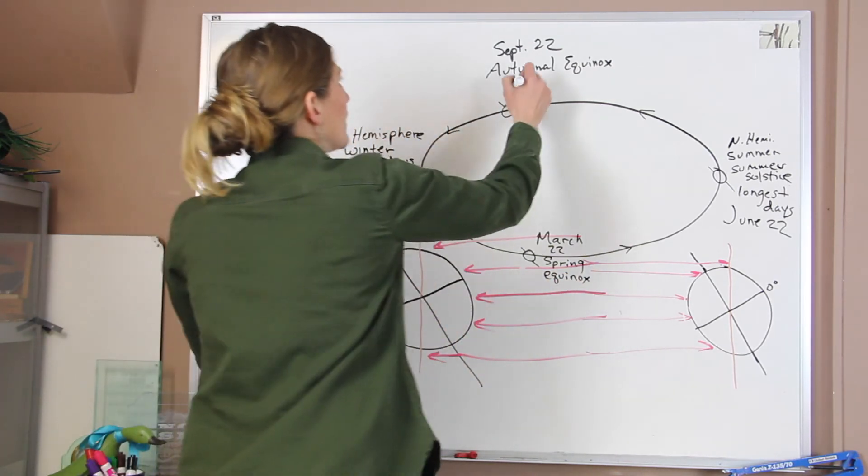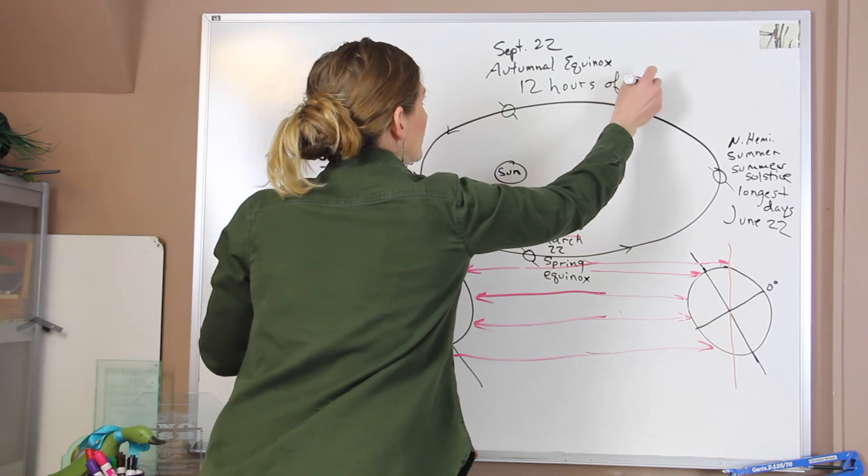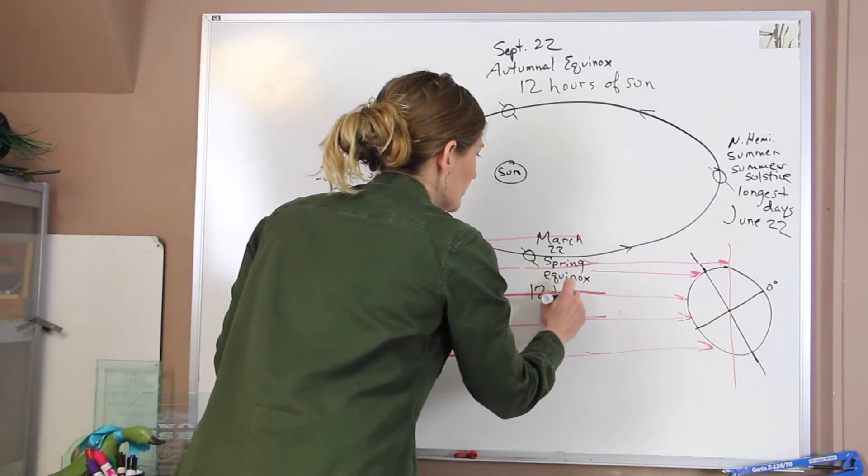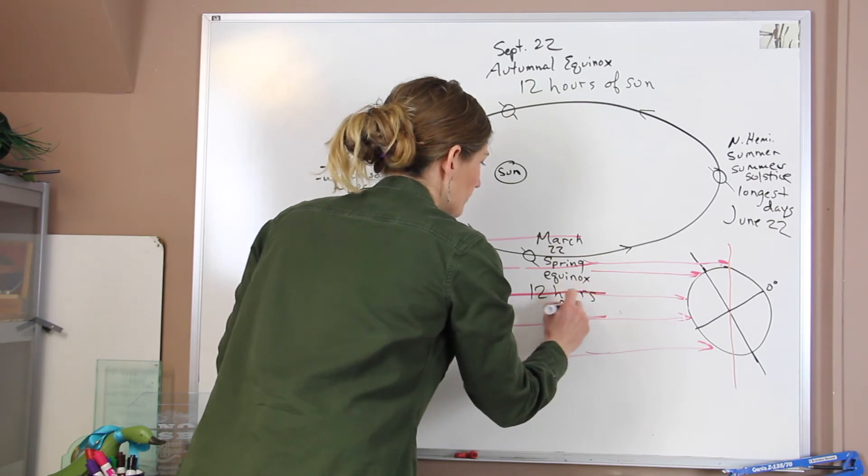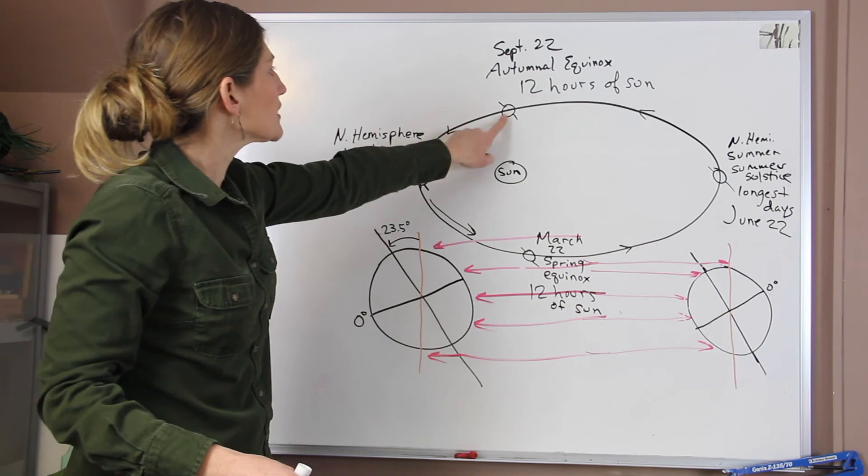And this is when we have 12 hours of sun at all latitudes. And that's in both places. So 12 hours of sun. And the question is, how is that happening? Well, if we just go and we look at this.